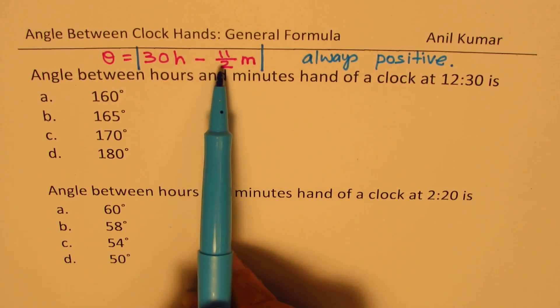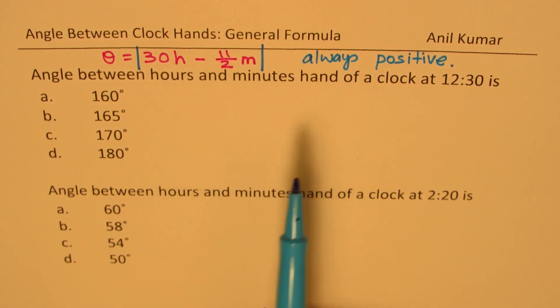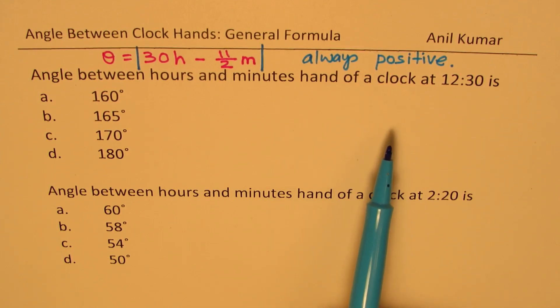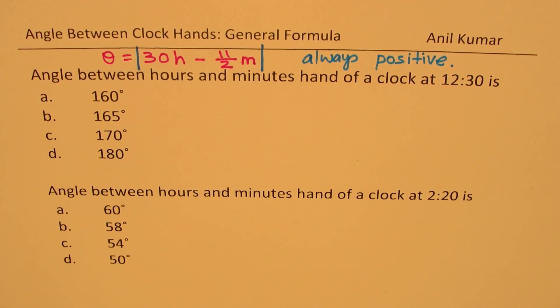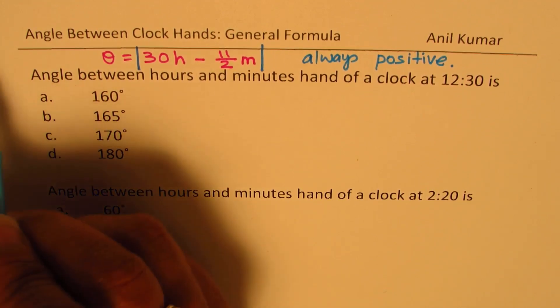While using this formula many times you have to think about whether the minute hand has crossed the hour hand or not. So accordingly this value could be positive or negative. Now let's actually look into the logic behind answering these questions.